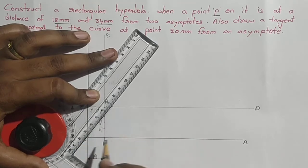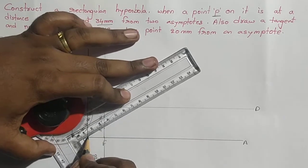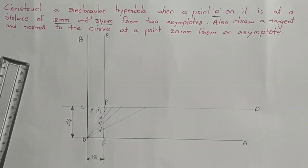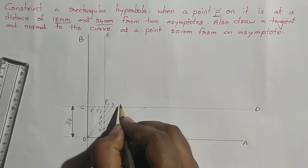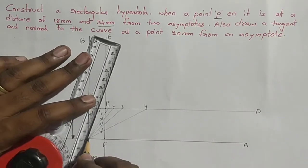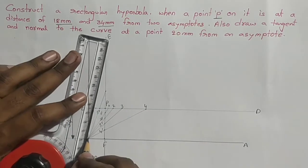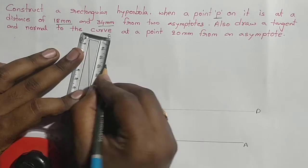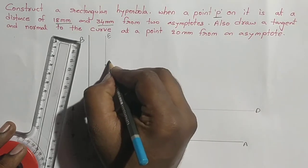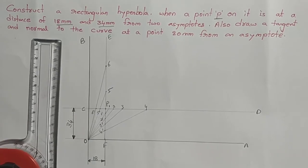Next O to 3 dash, extend up to CD. O to 4 dash, extend up to 4. Now we got different points: this point is 1, 2, 3, 4. Similarly join O to 5 dash and extend up to EF. O to 6 - the 6 line touches the vertical line at point 6, and this one is 5. Now we got all the points.